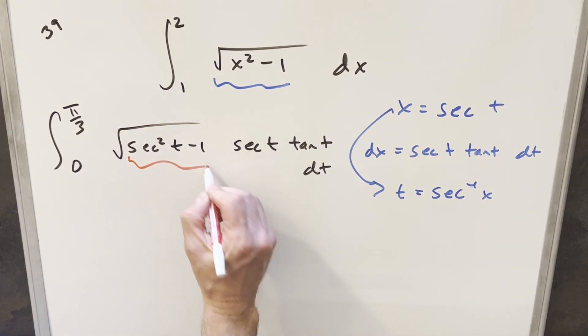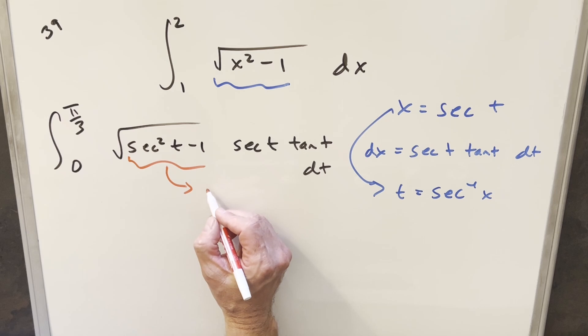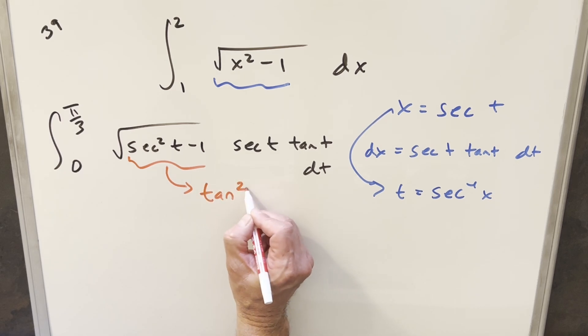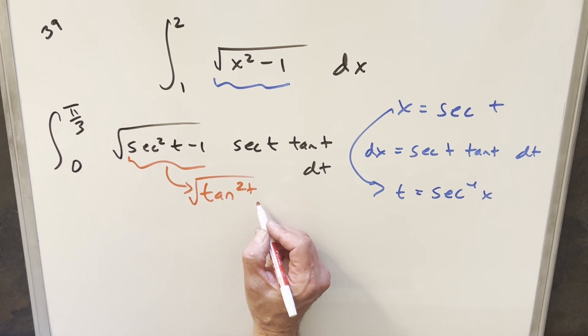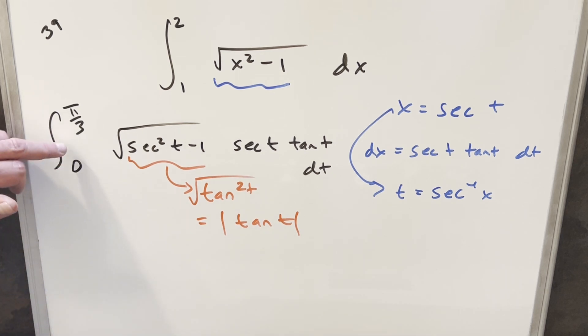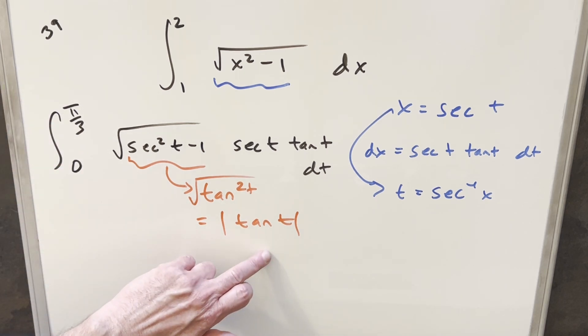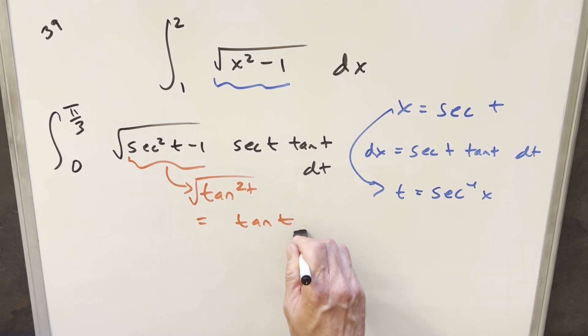But now for this here, we have the identity that this is the same thing as tan squared t. We're inside the square root. Because we have something squared inside the square root, I can write this as absolute value tan of t. But what's going to happen with our bounds between 0 and pi over 3, our t value is always in the first quadrant. So I can just remove absolute values because that's always going to be positive.